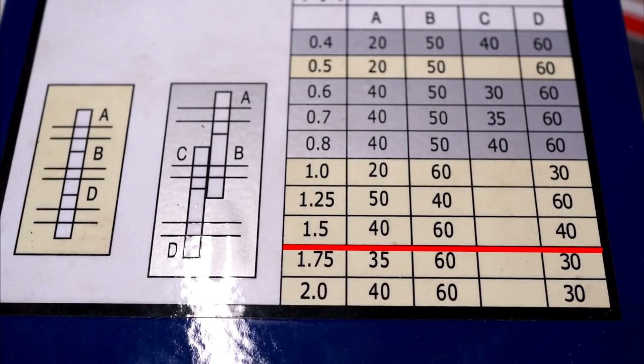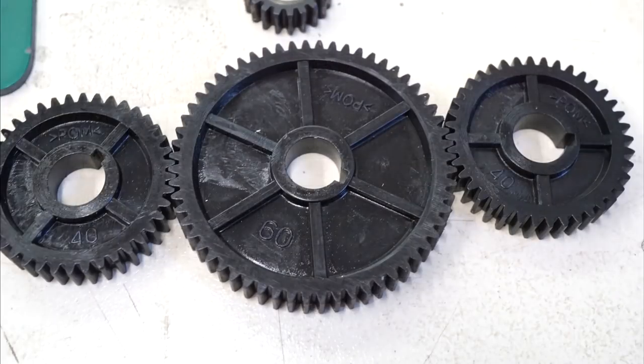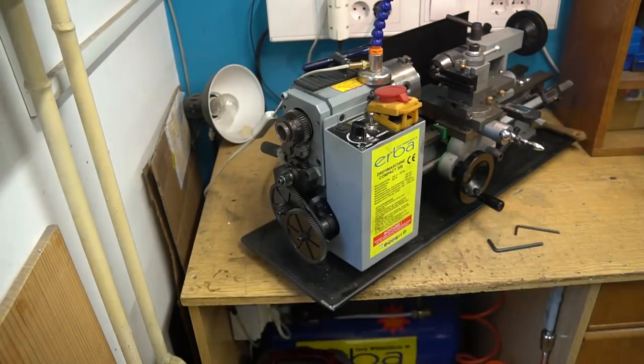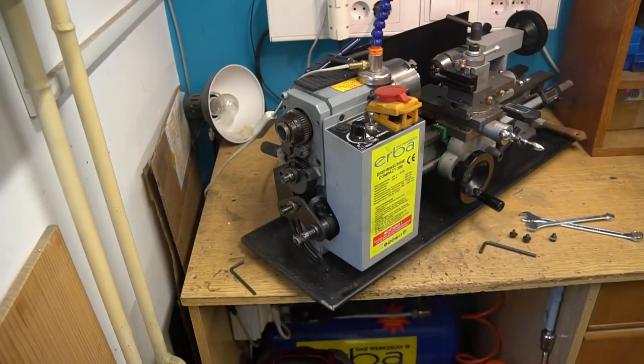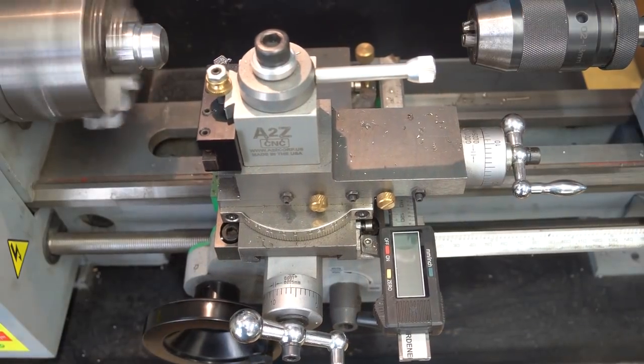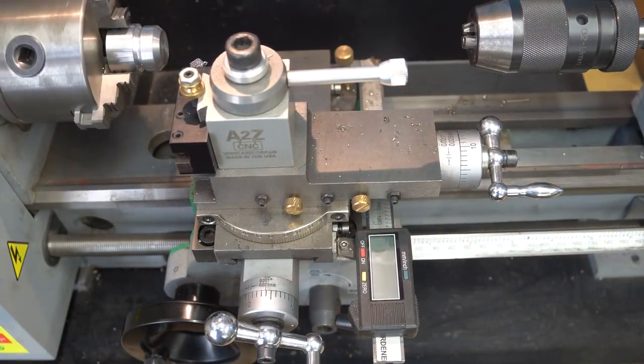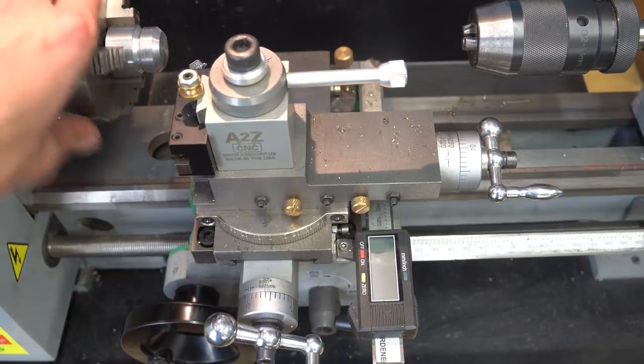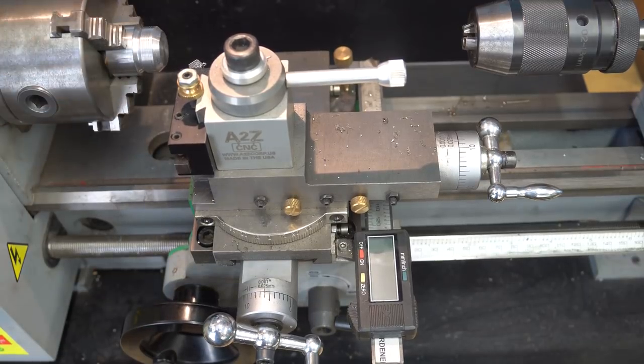The manual on my lathe says that for 1.5mm pitch I need to install gears with 40, 60, and 40 teeth. I got lucky this time because all of the gear axes stay in the same places, so changing is really fast. I got now 1.5mm pitch gear ratio. That means that for every turn the chuck makes, the z-axis of the lathe moves for 1.5mm.